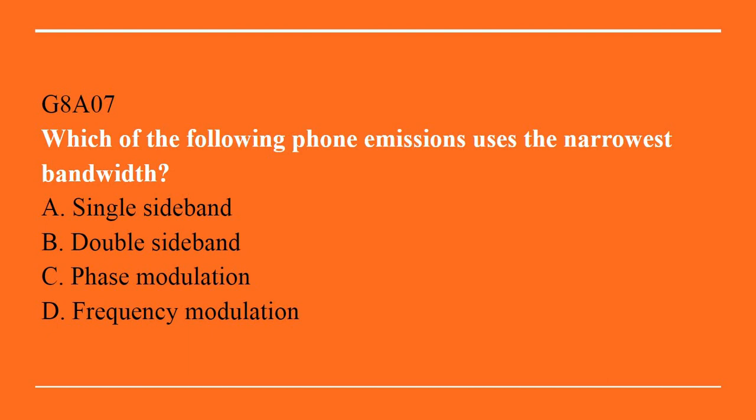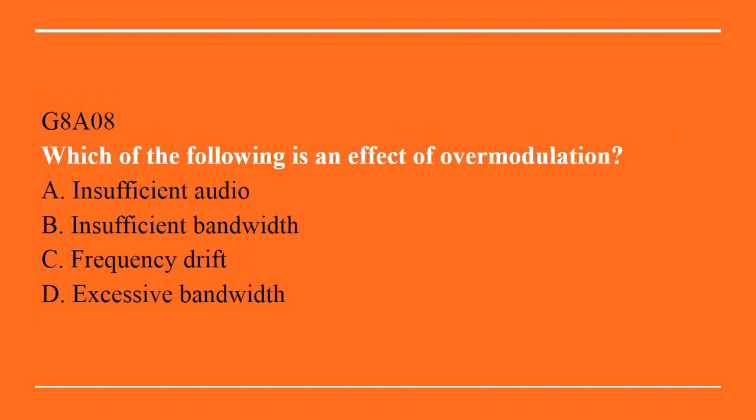G8A07: Which of the following phone emissions uses the narrowest bandwidth? A. Single sideband. B. Double sideband. C. Phase modulation. D. Frequency modulation. Answer is A. Single sideband.